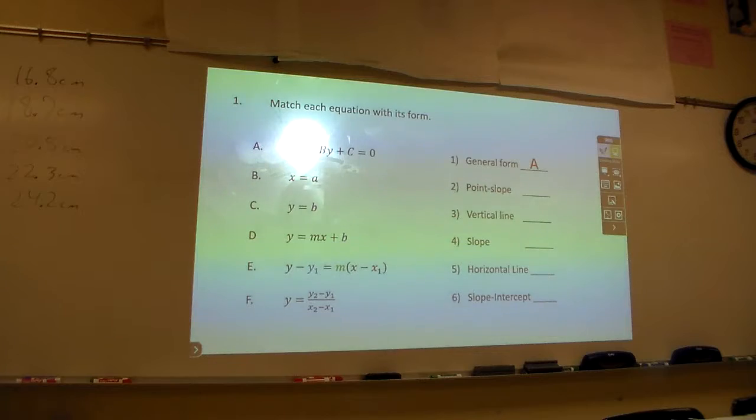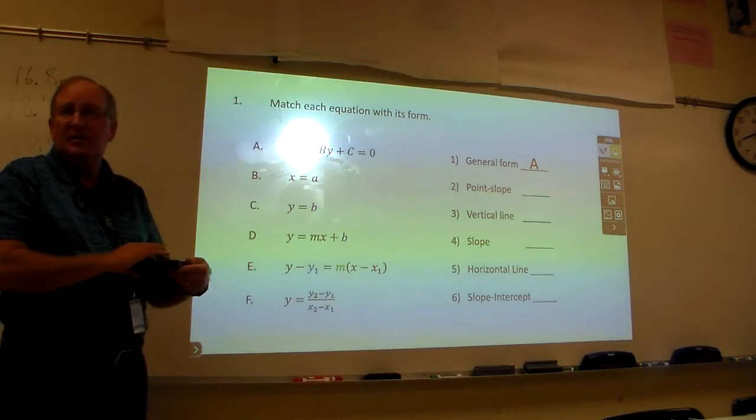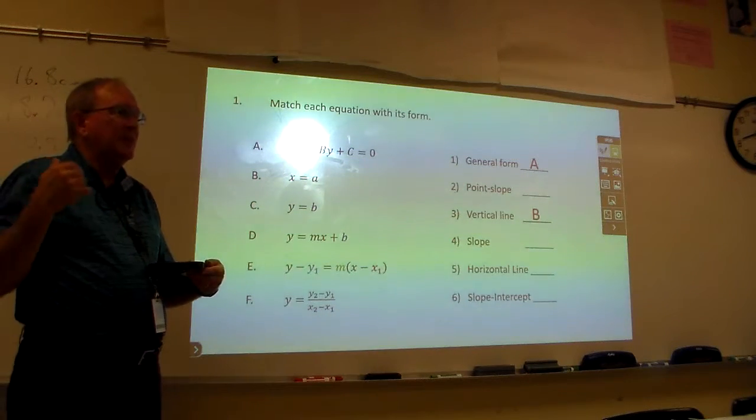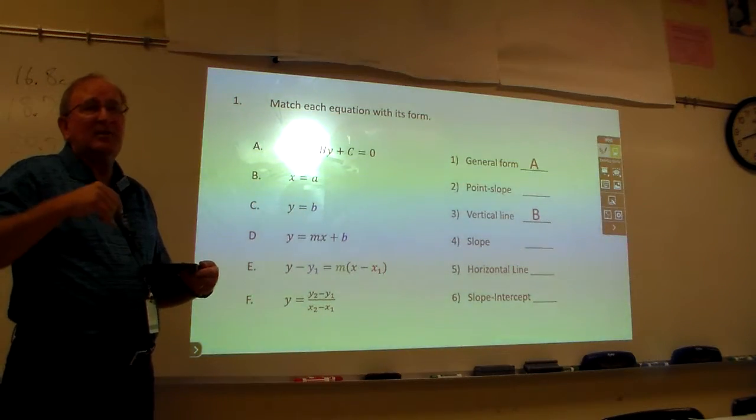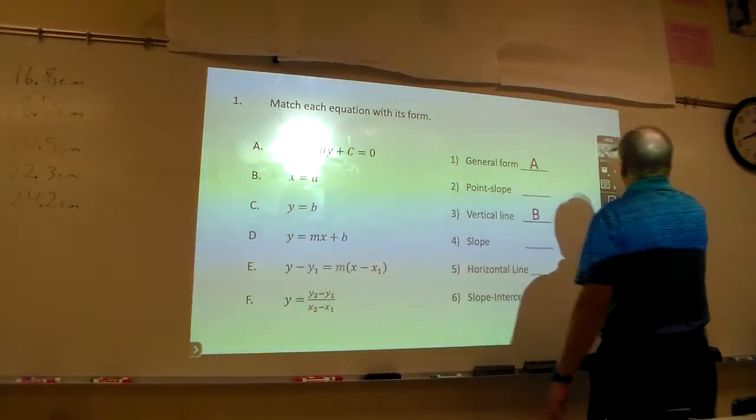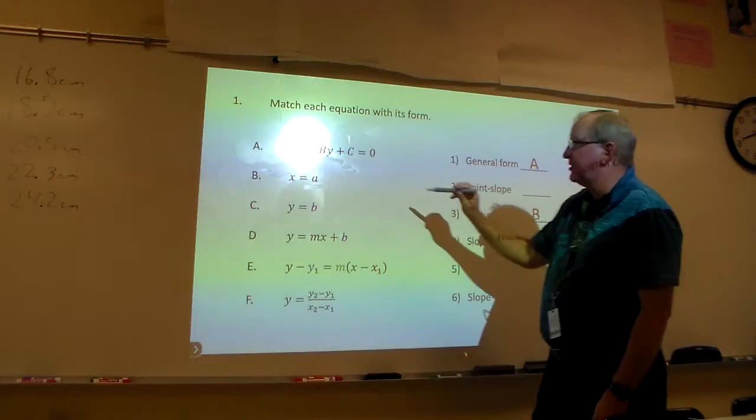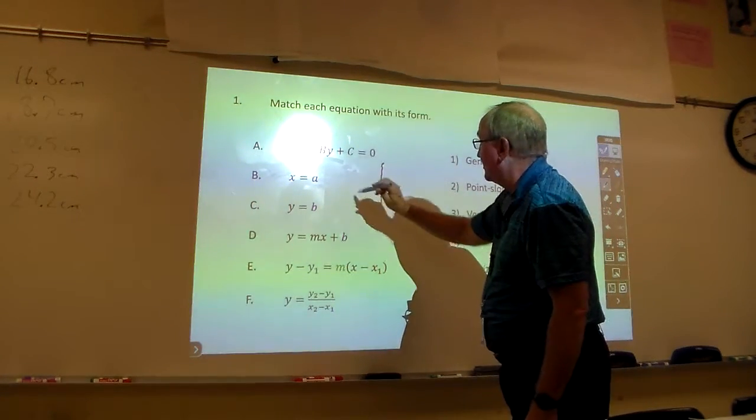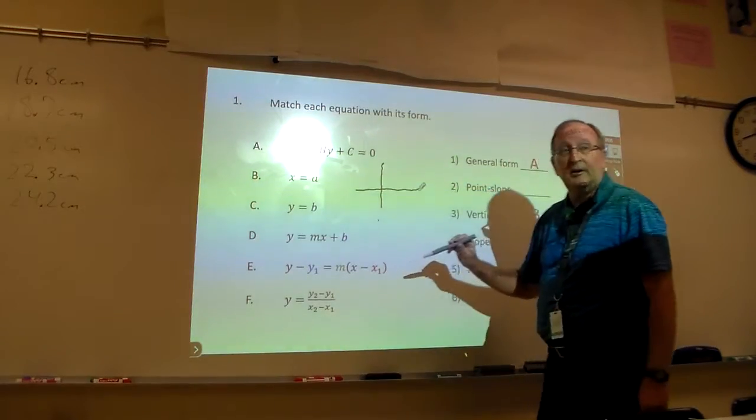So, this is the one everybody misses. X equals A is, it's not horizontal. It's vertical. Because, and it might help to actually draw, it might help to do this here on this one. On X equals A, to make a little thing like this here. Make a quick little bit like that, right?